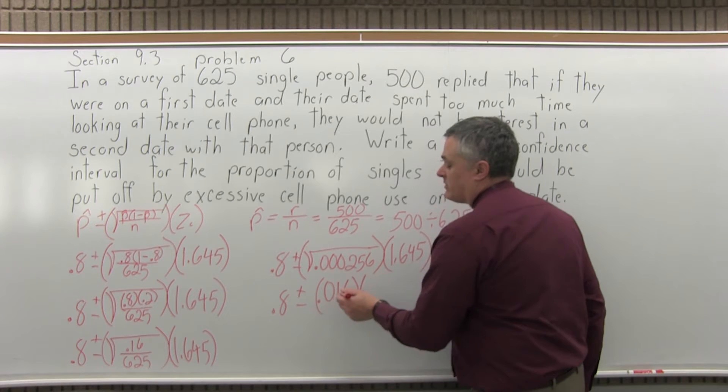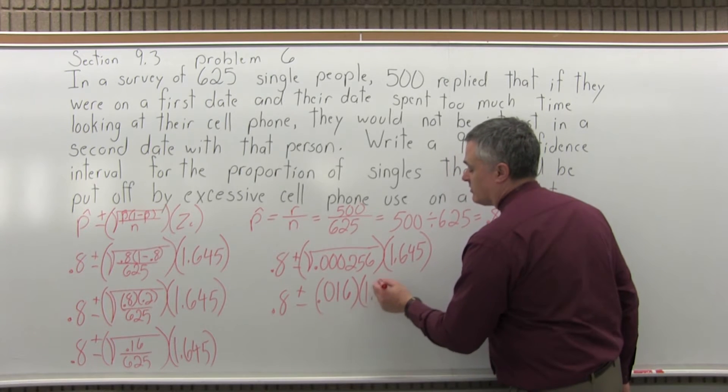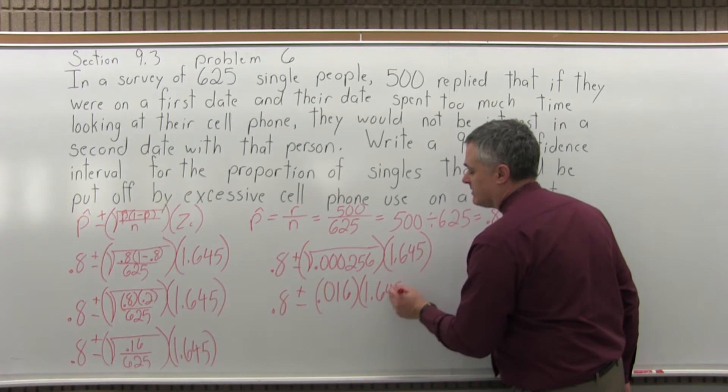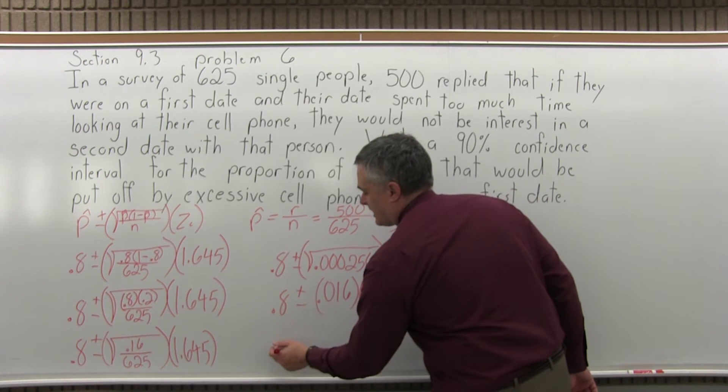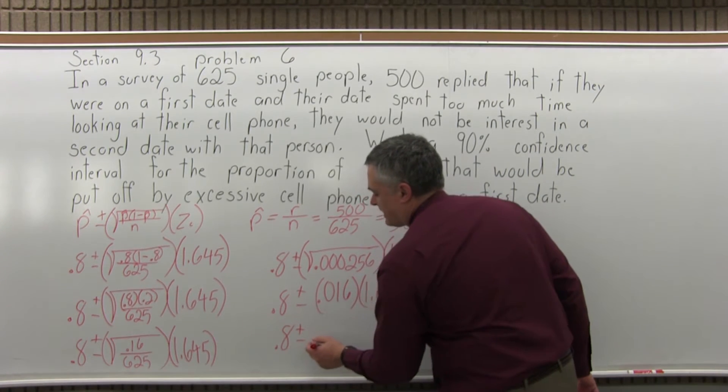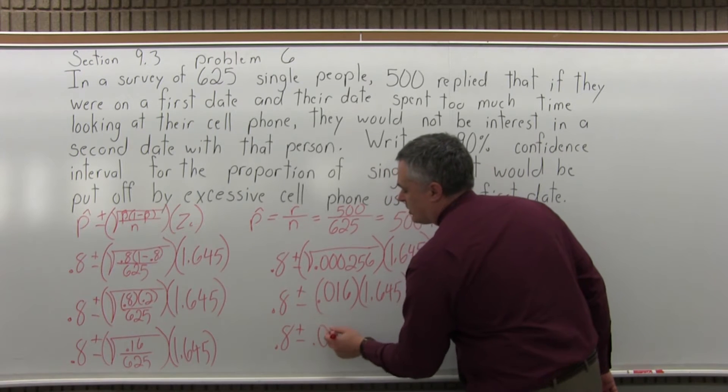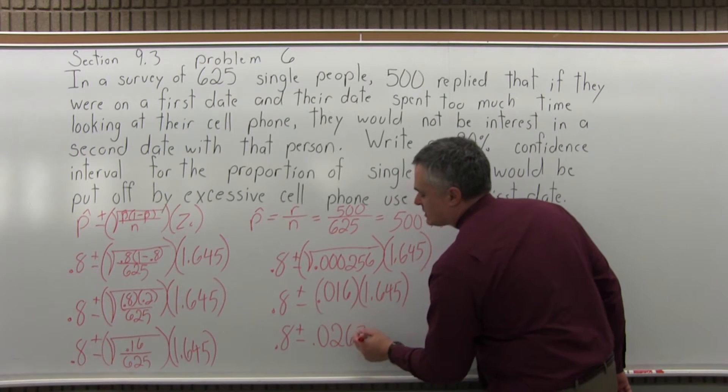And I'm going to multiply that result of 0.016, times the 1.645 at the end. And when I do, I'm going to have 0.8, plus or minus, 0.02632.